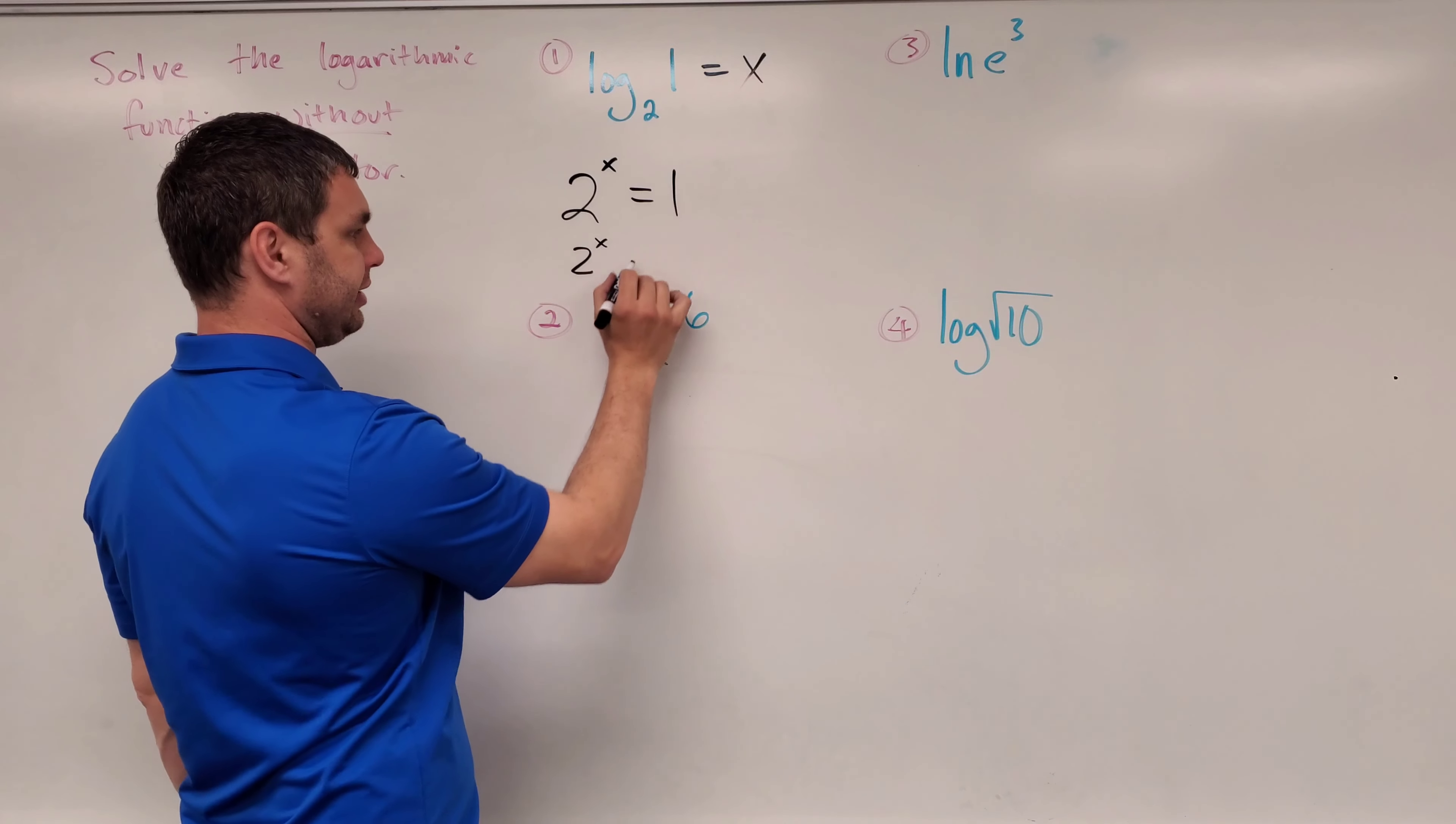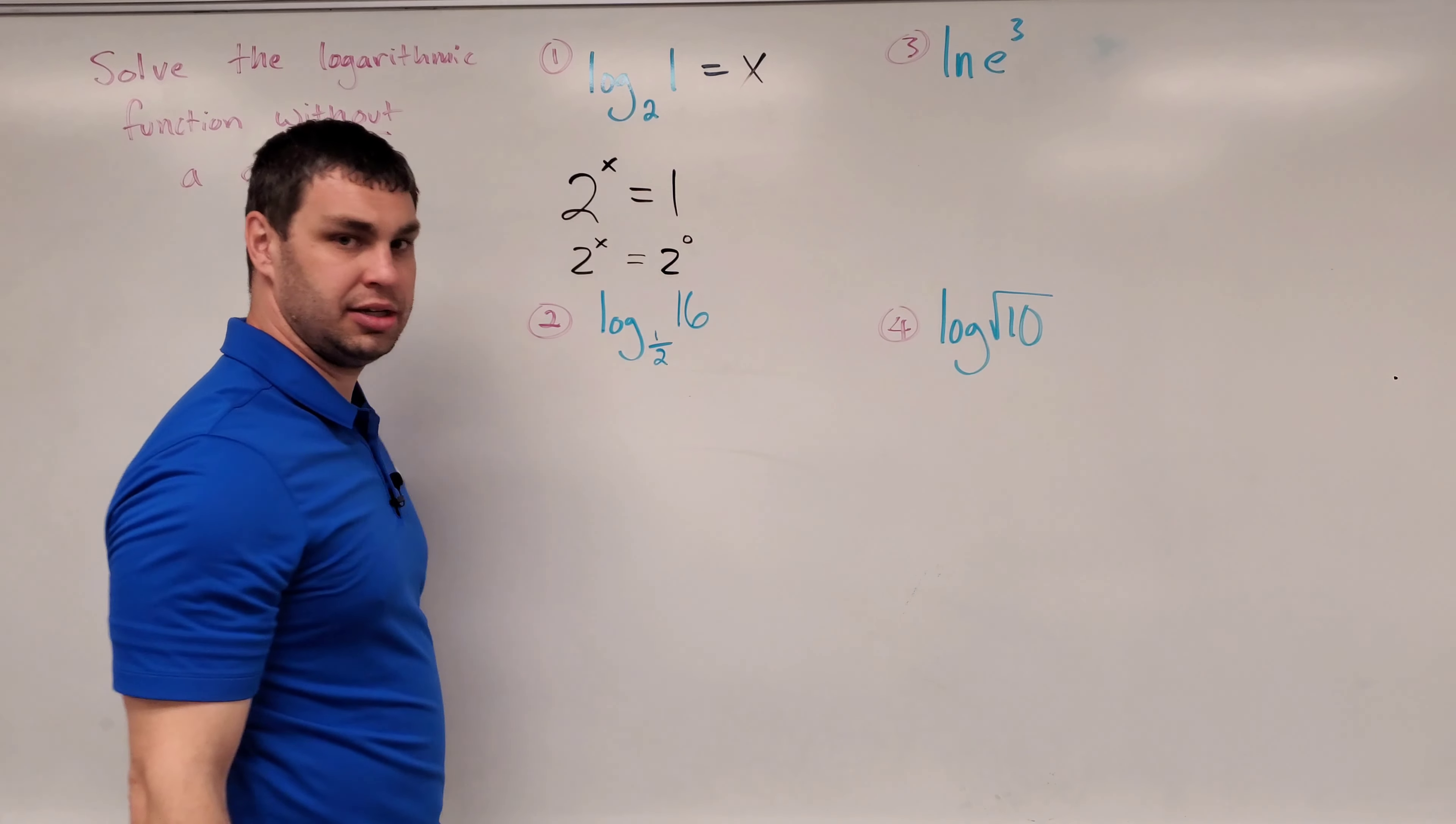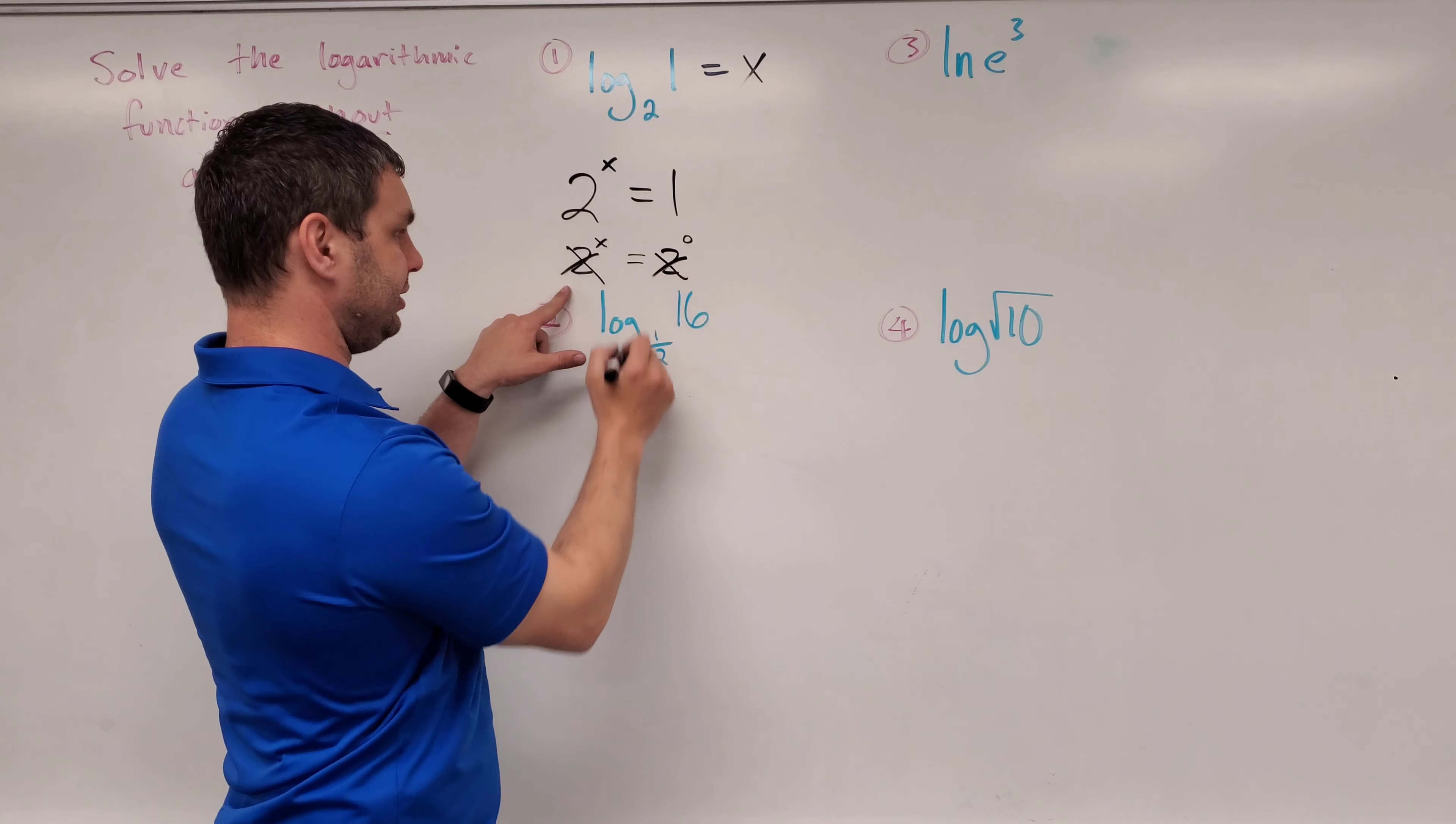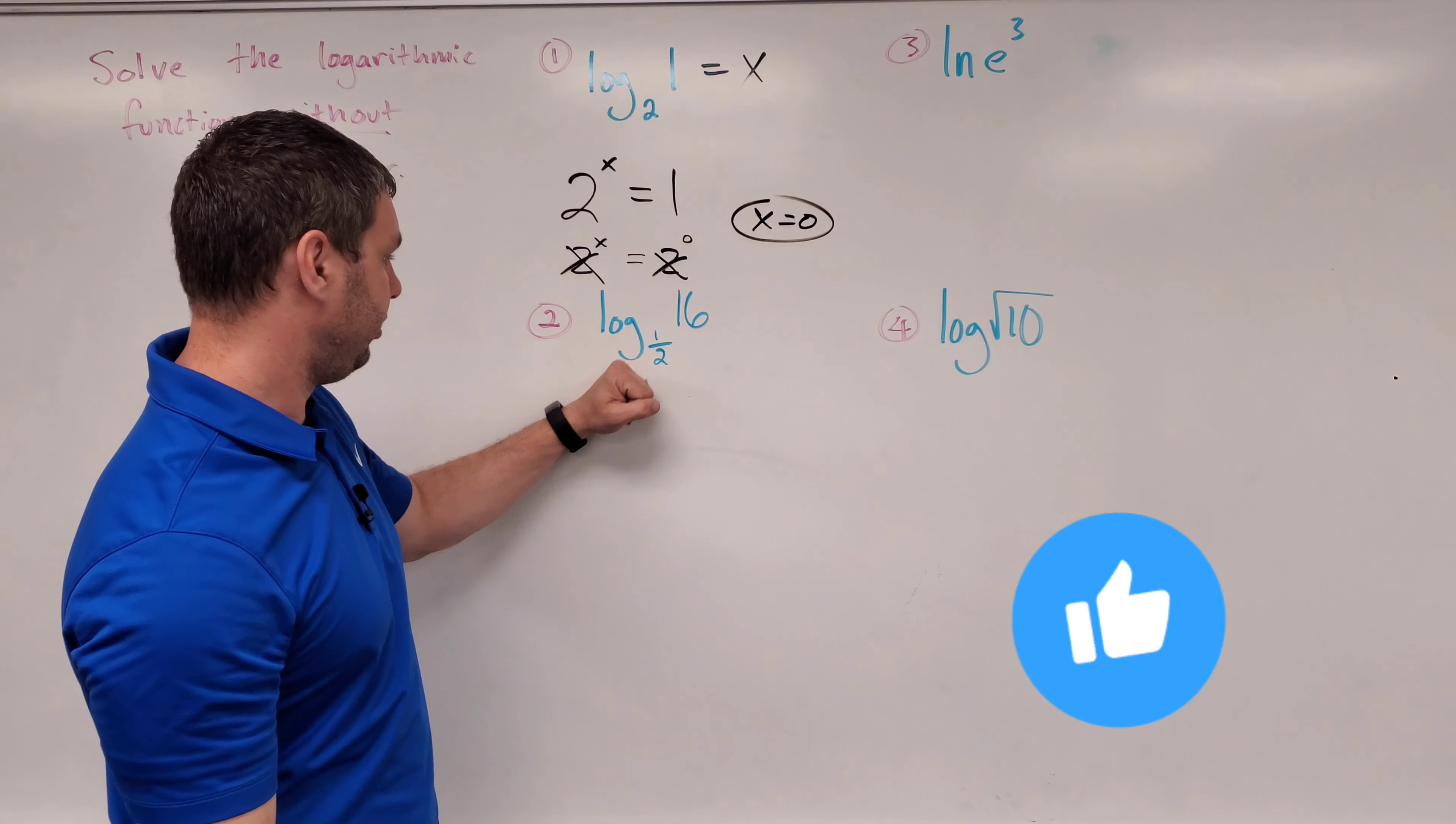So this one's already done to the x. I have to think 2 raised to what is 1? Well, 2 raised to the 0 power is 1. Therefore, I can just cancel off my bases and say that x equals 0. And it's solved. There you go. Now, the second one.